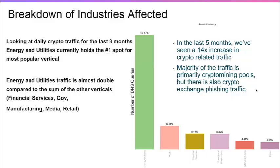Going back to the IoT use case — the number of devices and the variable security load they carry — we're finding from our industry data around crypto mining and cryptojacking a massive increase in energy and utilities. These industries may have older infrastructure with less capable security. We're doing a lot of work with both government and national critical infrastructure to help address this and show how they can start blocking against it.